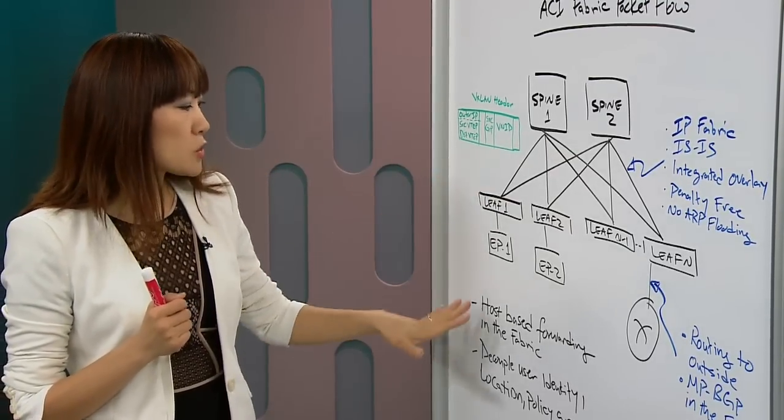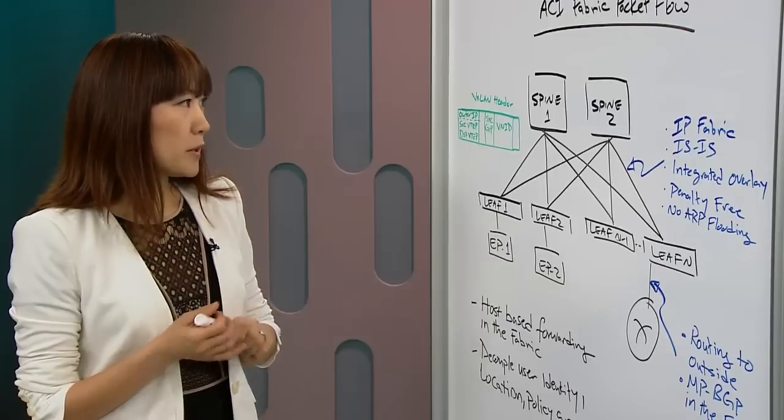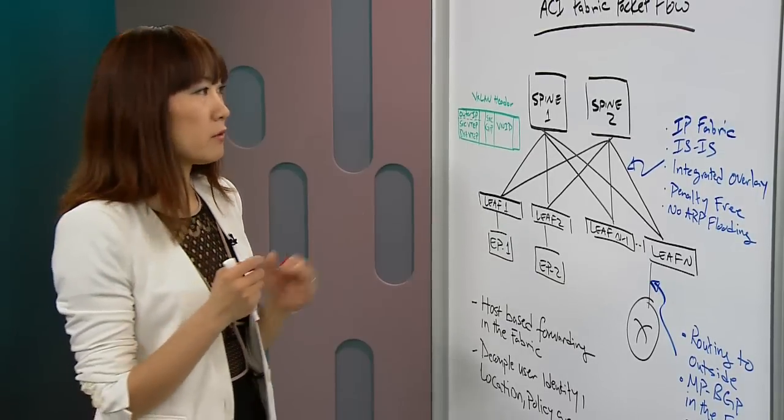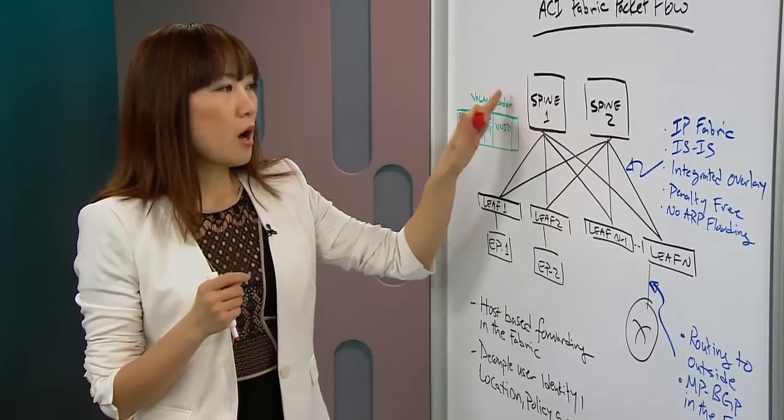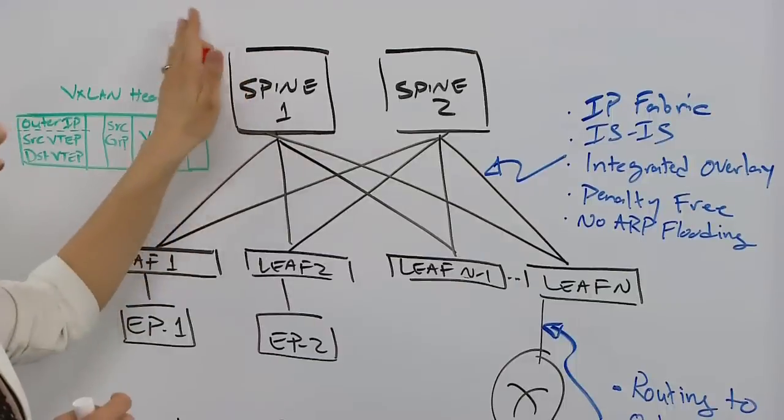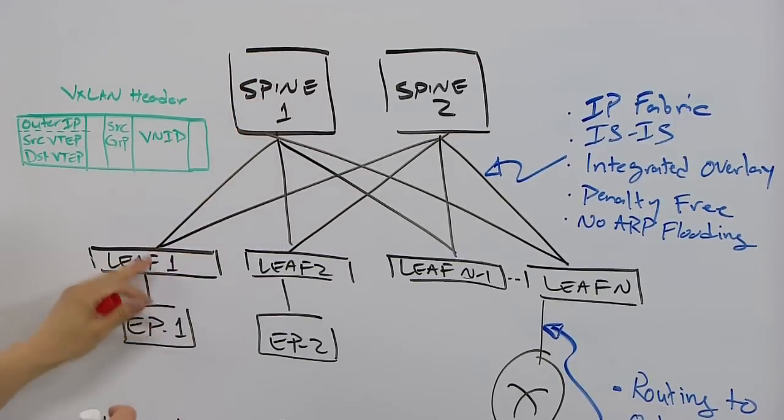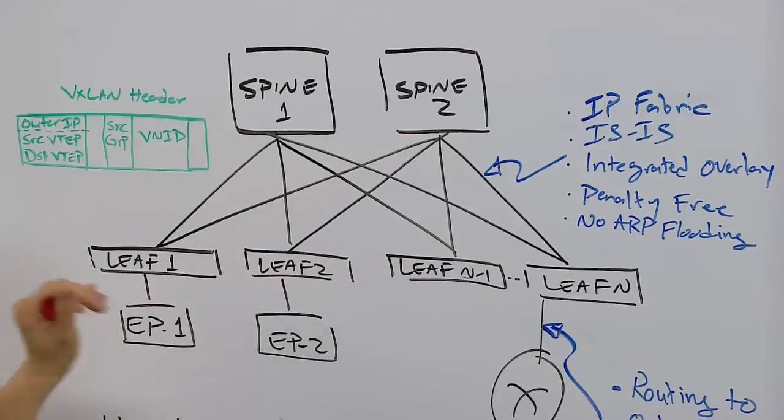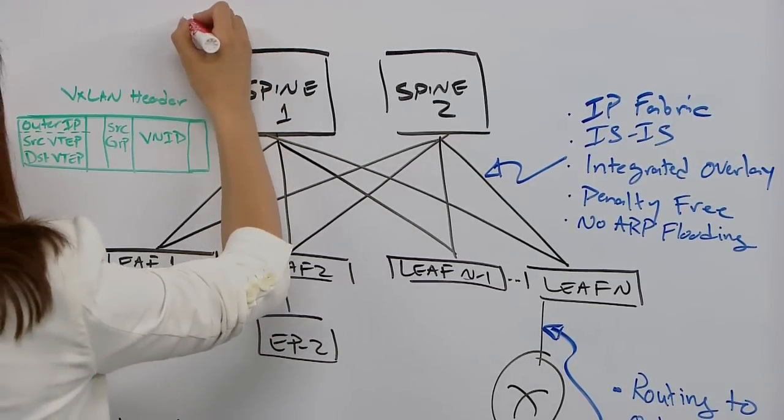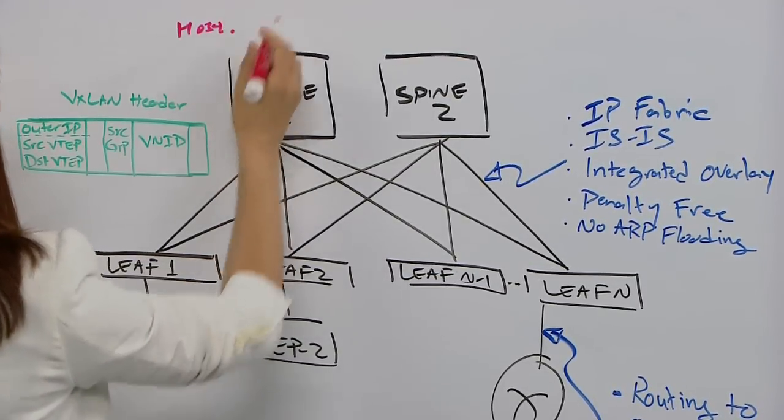And also the host information will be saved or stored in the SPINE nodes. Each SPINE node has a complete forward information for all the hosts which are connected into the fabric. This is a complete forwarding table.